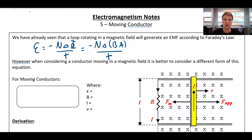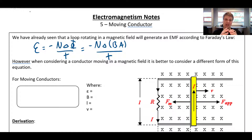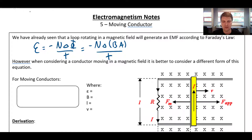We could change flux in a couple of ways: we could change the field strength, or we could change the area — we could take a loop of wire and stretch it out or compress it, and that would change the flux as well. With that in mind, let's think about this situation.